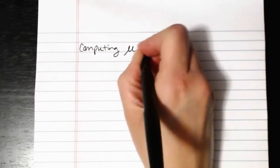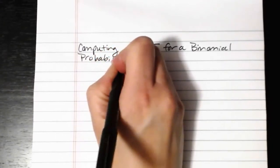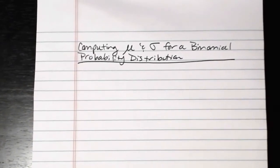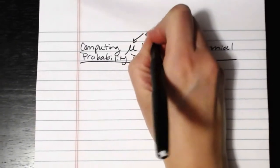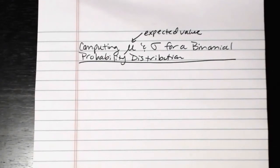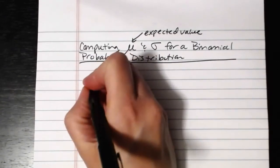If we want to compute mu and sigma for a binomial probability distribution, the mean is also referred to as the expected value. For the binomial probability distribution, this is actually the most commonly occurring value, and in many ways it's the value that we will expect to occur. You can do this two different ways — with the formula or on the calculator.